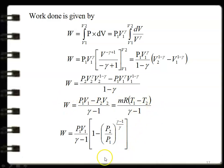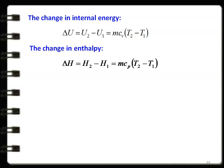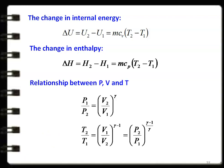Change in internal energy for the adiabatic process: ΔU = U2 − U1 = m·cv·(T2 − T1). Change in enthalpy: ΔH = H2 − H1 = m·cp·(T2 − T1). Relations between pressure, volume, and temperature: P1/P2 = (V2/V1)^γ; T2/T1 = (V1/V2)^(γ−1); T2/T1 = (P2/P1)^((γ−1)/γ). All these equations are important for problem solving.